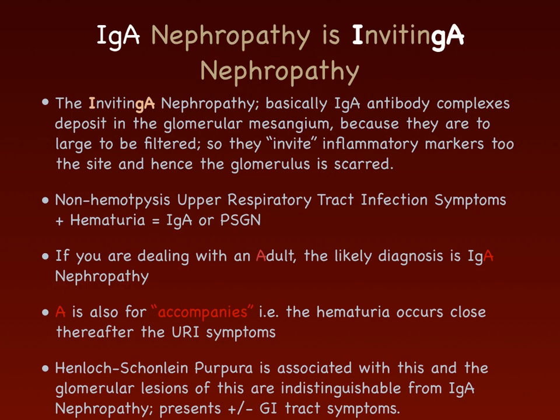Henoch-Schönlein Purpura is associated with IgA nephropathy, and the glomerular lesions are indistinguishable from IgA nephropathy. The distinguishing features are the purpuric lesions, hematuria, and likely GI tract symptoms. You may not have upper respiratory tract symptoms in Henoch-Schönlein Purpura, but there will definitely be some GI tract symptoms.